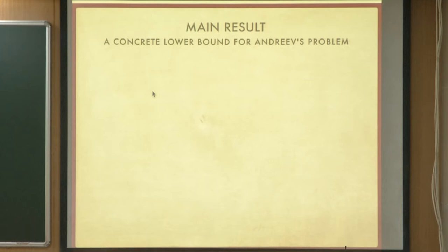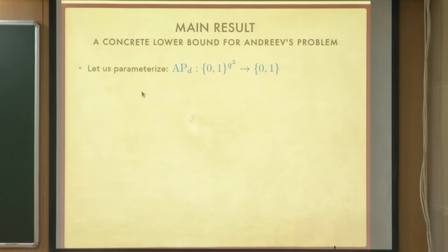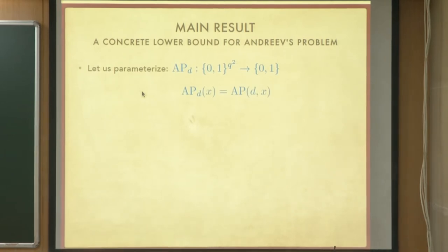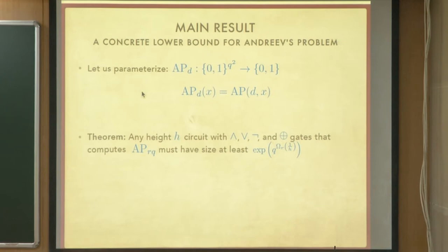Here is the main result, which the title may have suggested. We parameterize by fixing a degree beforehand — this only makes whatever lower bound stronger. Let us agree on a degree beforehand; now it is just a Boolean function on q-squared bits. Any AC0-parity circuit — a high-depth circuit with AND, OR, NOT, and parity gates — that computes this function must have size at least some sub-exponential in the number of inputs. This omega depends on r.